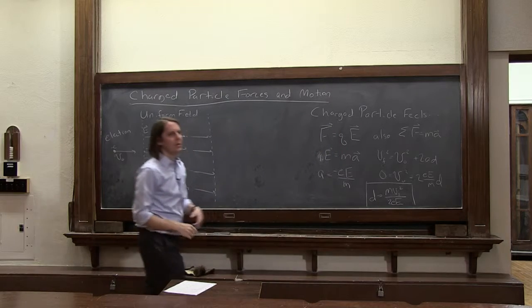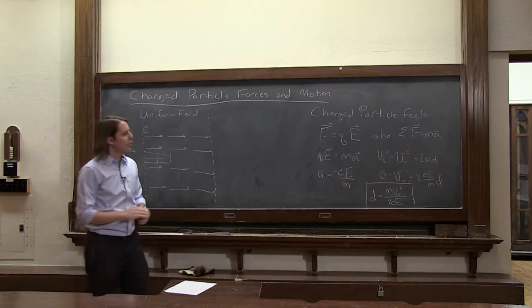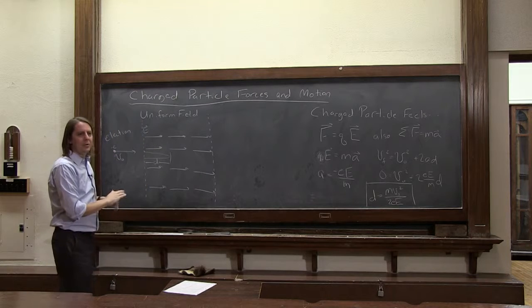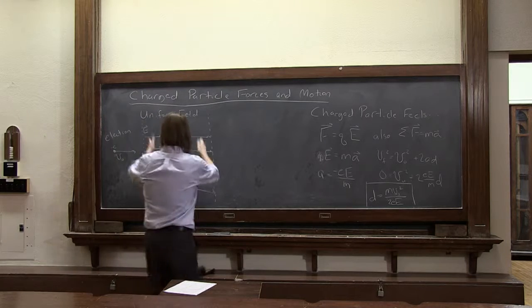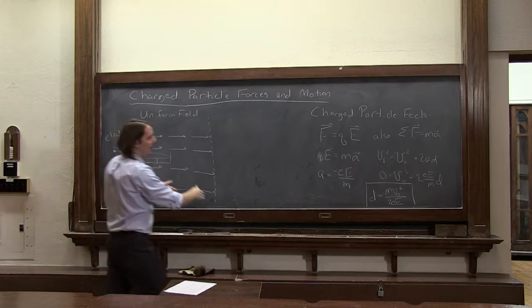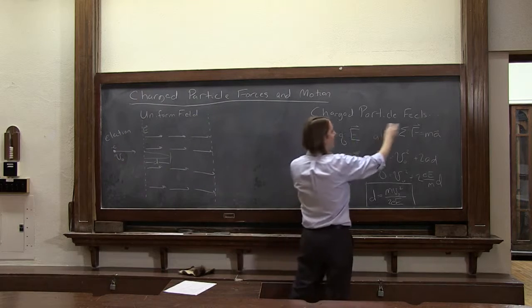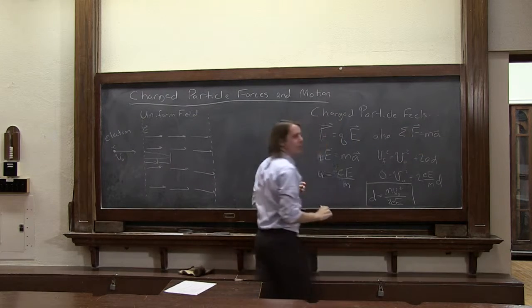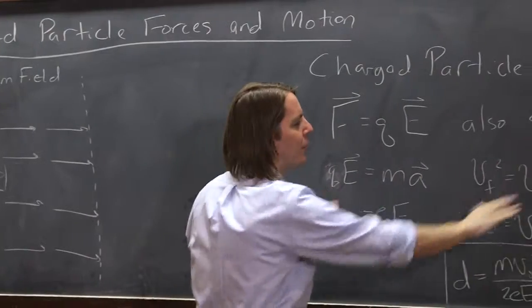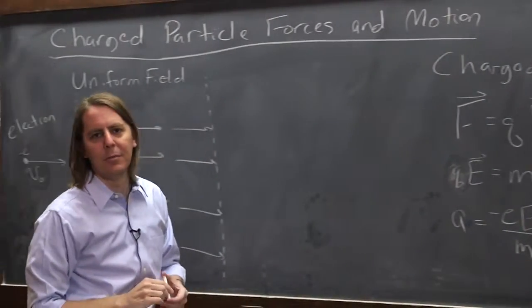m v naught squared over 2, literally, times ee. So just a simple example of using the kinematics. Really the key to remember what a uniform field looks like, the fact that it's just f equals qe, combine that with the standard Newton's second law, and then apply the standard formulas you used in mechanics.